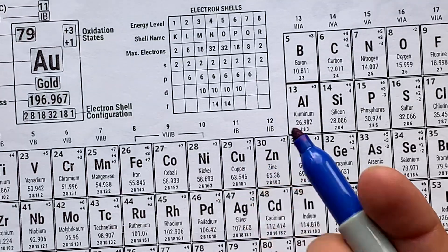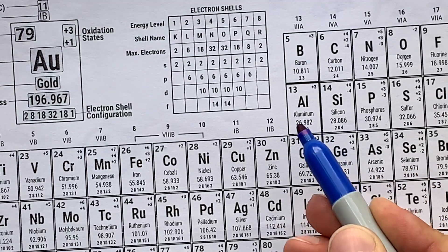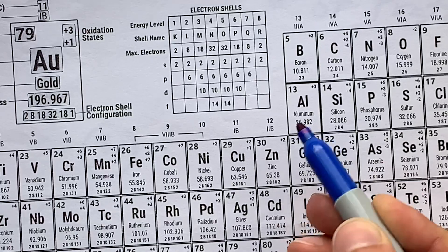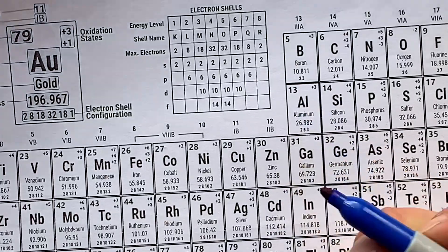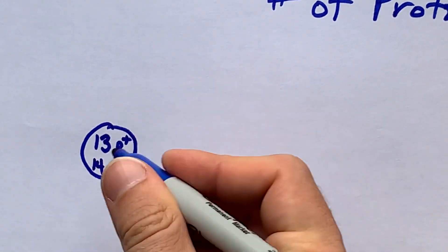The number of neutrons in aluminum is generally about 27 minus 13, which is 14. But atomic number itself is actually only the number of protons in the nucleus.